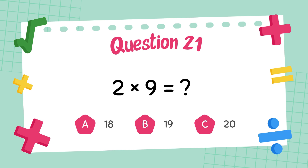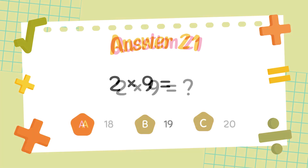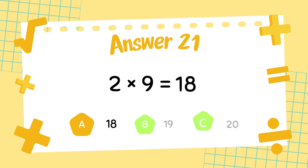What is two times nine? The answer is eighteen.